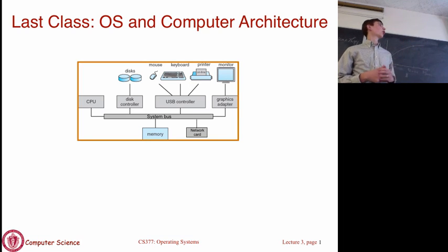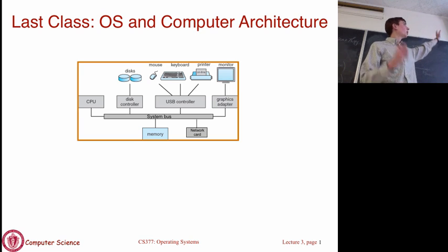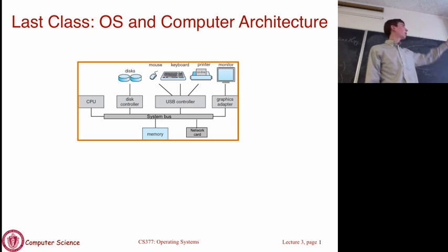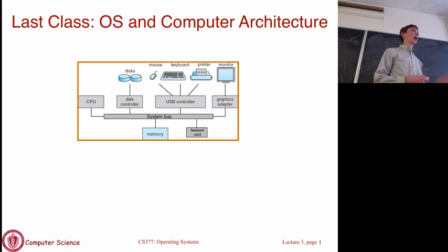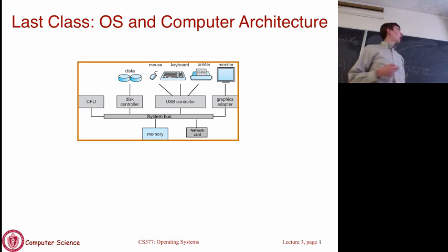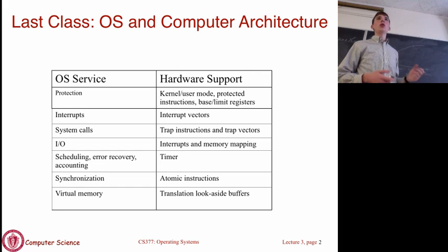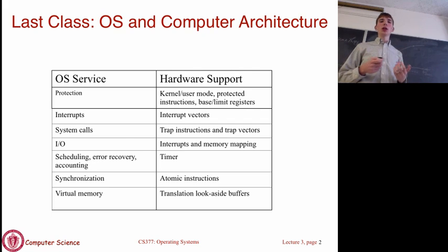Last class we talked about architecture. The big picture high-level view of your computer is you have a CPU doing most of the work, main memory where you store everything, I/O devices, and everything is connected with this system bus that shuttles data back and forth between the CPU, memory, and the I/O devices. We talked about the main architectural components that enable the useful features of operating systems.